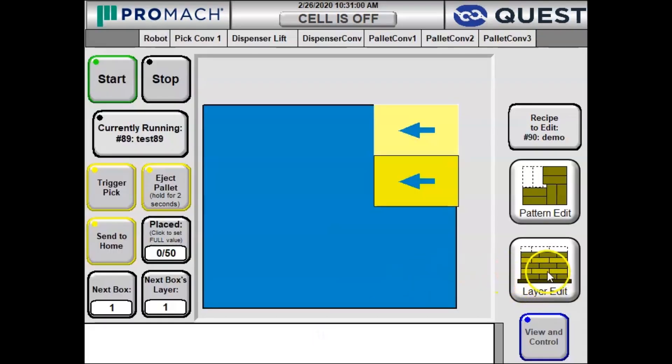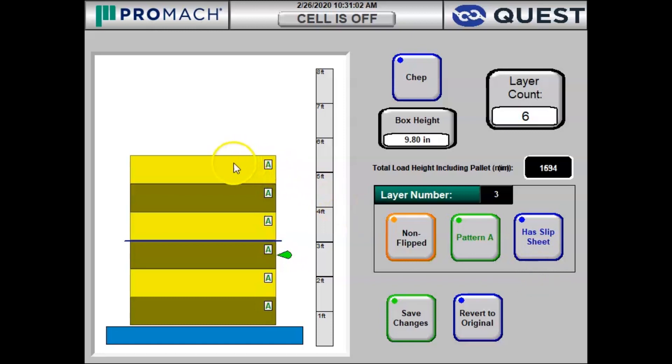Now we go to layer edit and here we can set how many layers our stack is. Let's say we have seven layers on this stack. And let's say the first three layers are all column stack and after that we start flipping every other layer so we have a nice interlock.